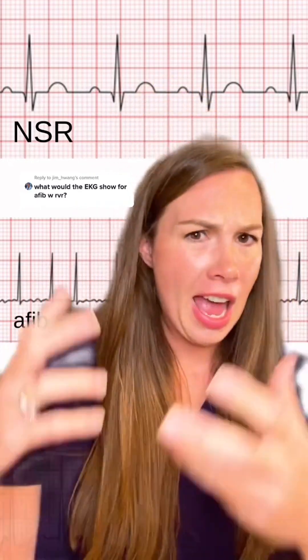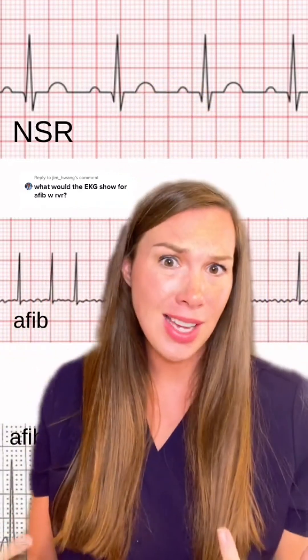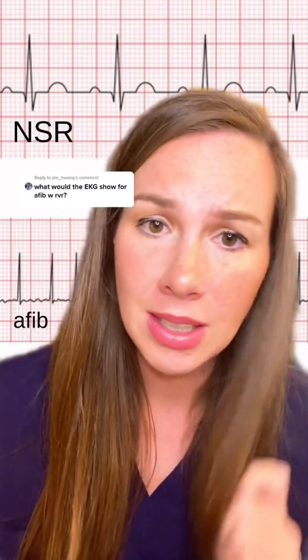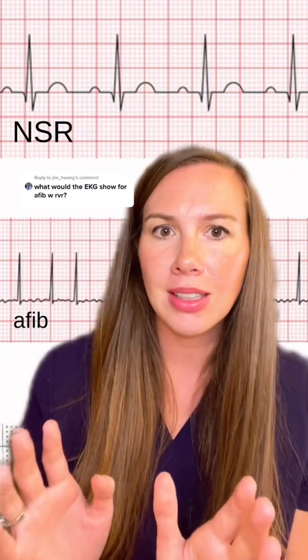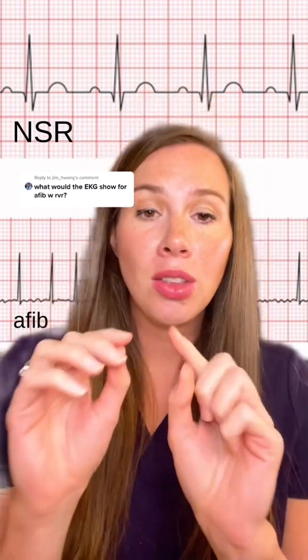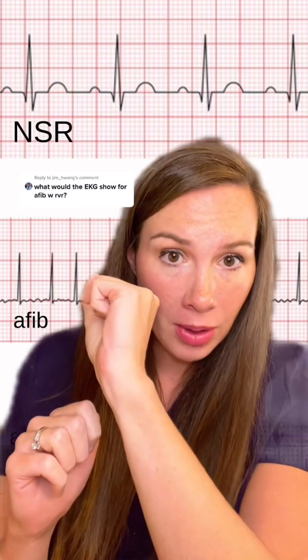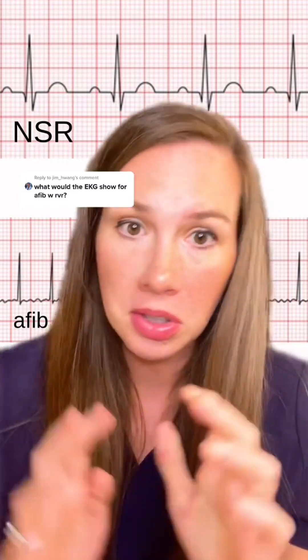Common question: how do you know this is not SVT? Here's the thing — if the heart rate is 150, 160, 170, you're not going to be able to tell the difference with your naked eye. The P wave in SVT with a high heart rate is buried in the QRS, so it will be kind of indistinguishable on the monitor. That's why you've got to get that EKG.